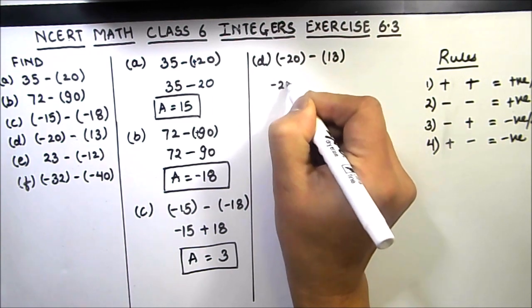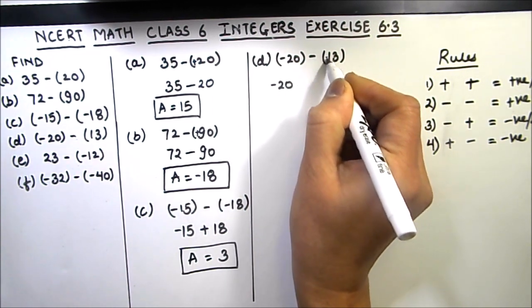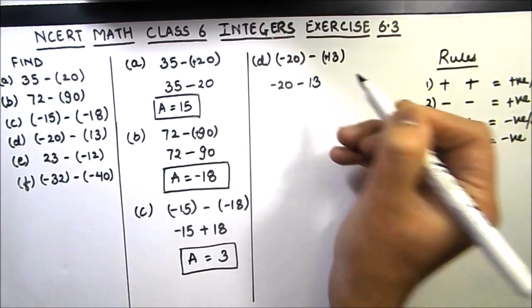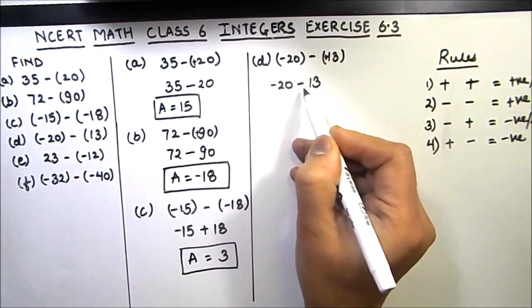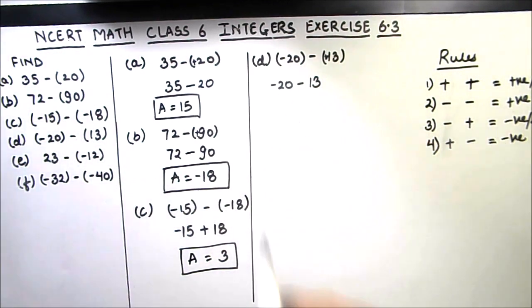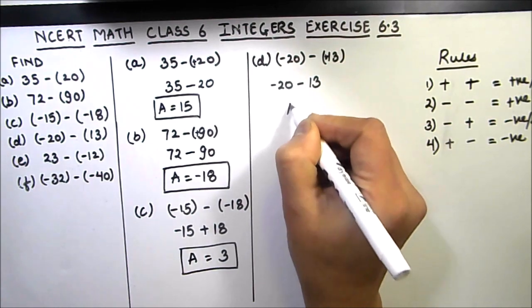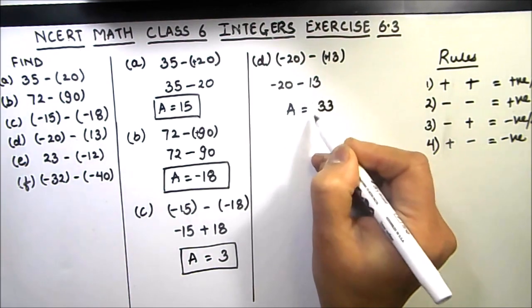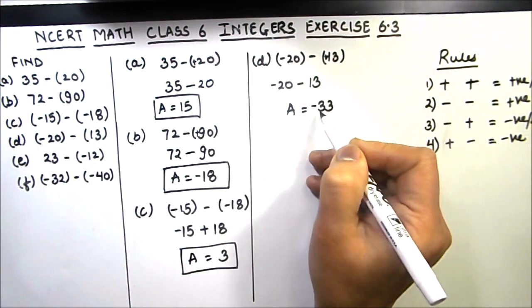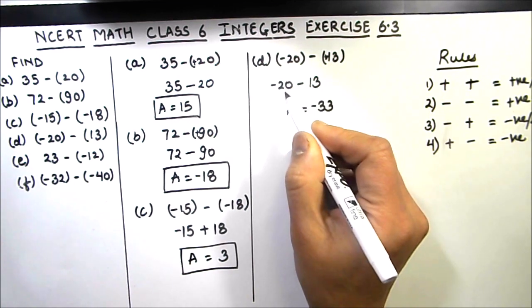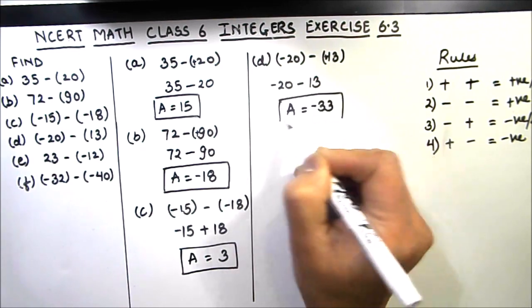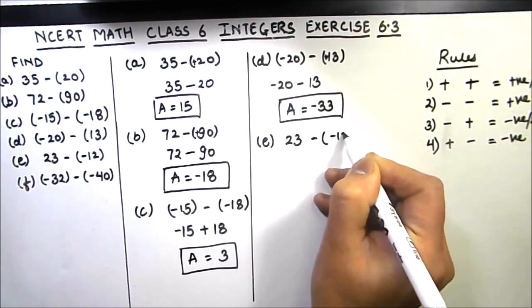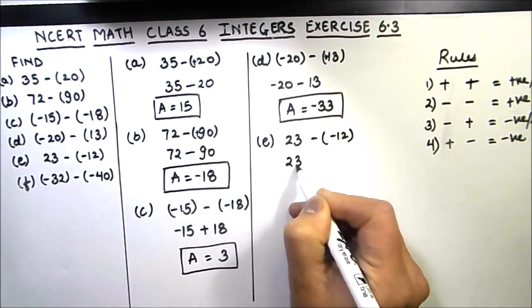Part d is minus 20 minus 13. We have minus 20, and minus and plus gives minus 13. Now we have minus 20 and minus 13 — same signs — so we add the two numbers: 20 plus 13 is 33. Both numbers are negative, so the sign is negative. The bigger number is 20 and its sign is negative, so the final answer is minus 33.